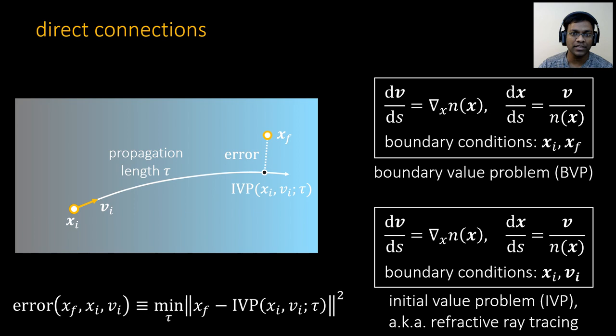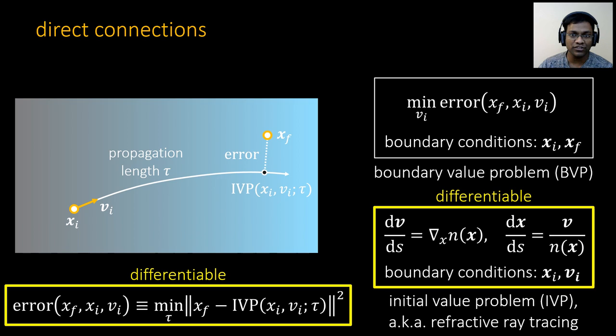Note that this error is a function of the initial velocity vI. Now we can restate BVP as a solution that minimizes this error while varying vI.